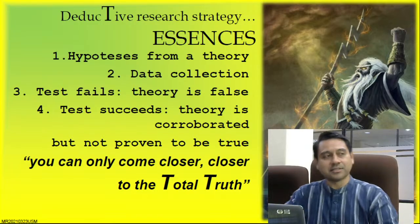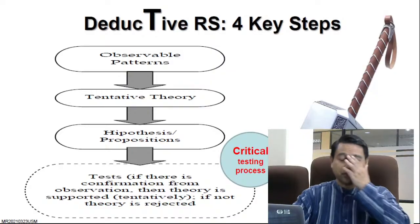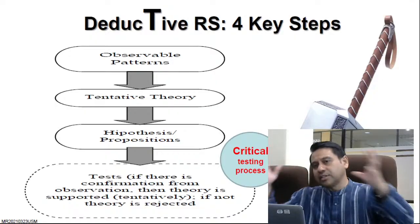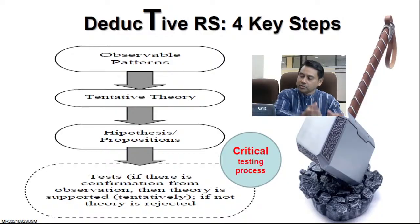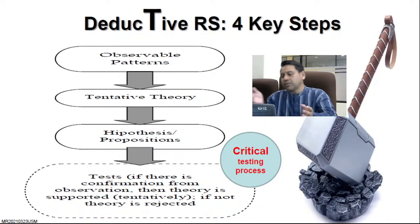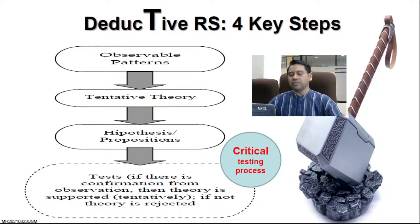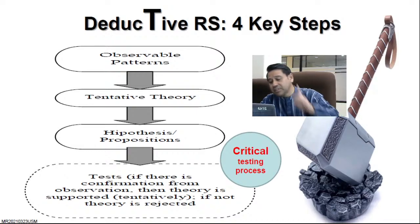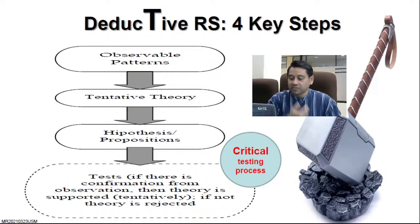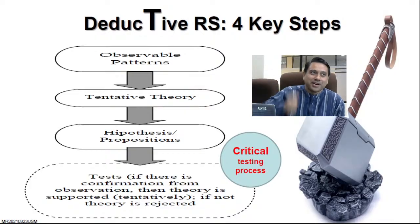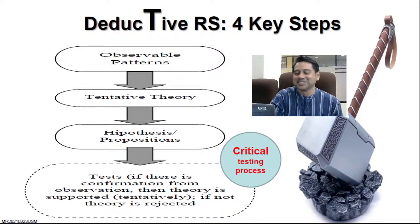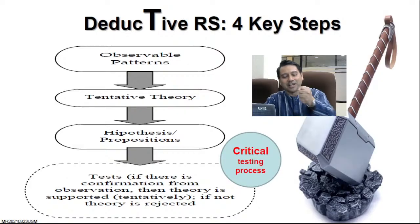The four key steps of deductive research strategy: start from observable events and patterns, identify what theories are relevant, derive hypotheses from multiple theories, then test those hypotheses. If the data confirms, the theory is tentatively supported. If not, the theory is rejected. It has to go through the hammer — Mjolnir. If Mjolnir cannot break it, the theory is corroborated but not yet proven true. This is the essence of deductive research strategy.